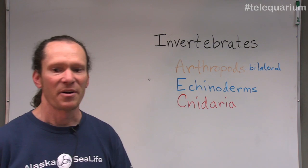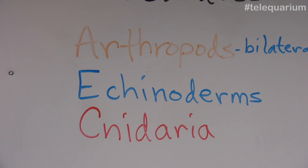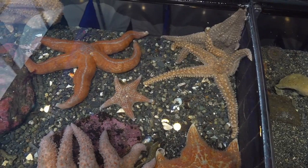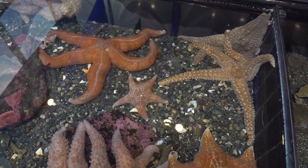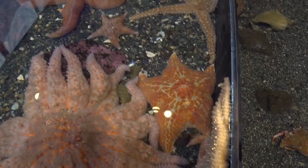Let's check out our next group: the echinoderms. Echinoderms are going to be animals like sea stars and urchins. Let's take a look at a couple of sea stars first. Here we have a few of our sea stars in the touch pool. On the left we have a true star, in the middle a small leather star, and over on the right a couple of fish-catching stars. Down here that big orange one is another larger leather star, and in the center we have a sunflower star.